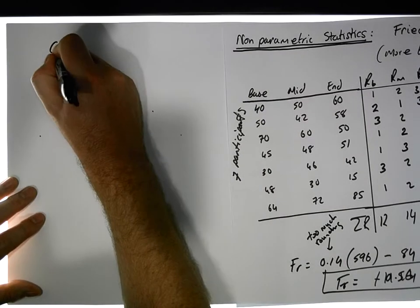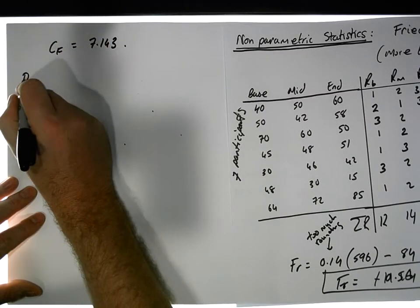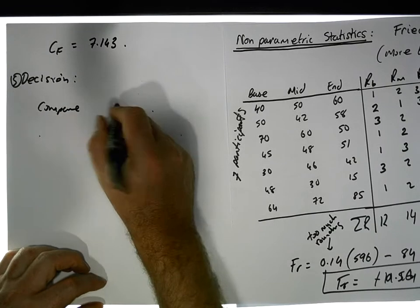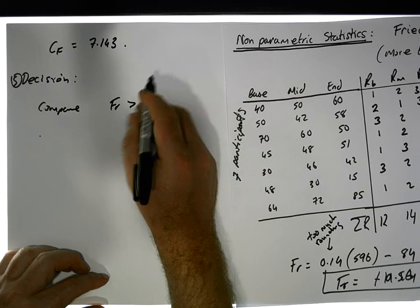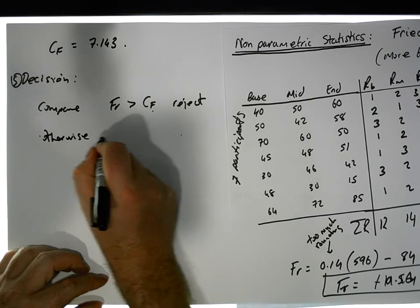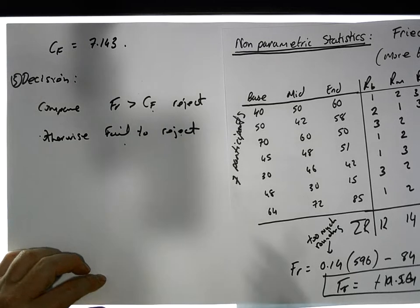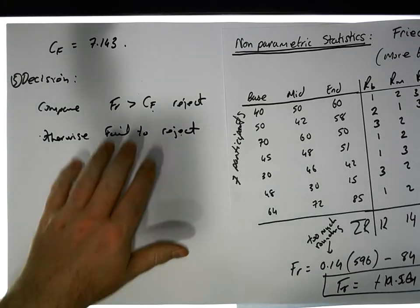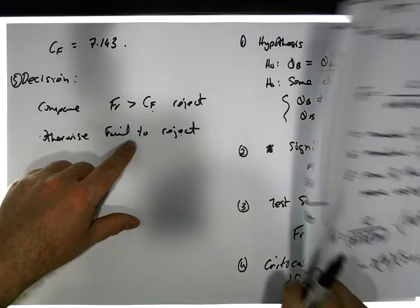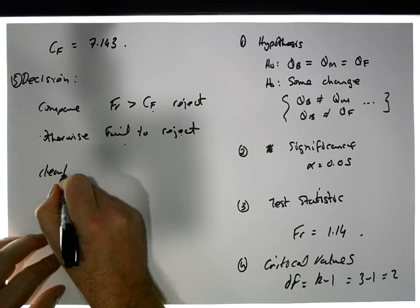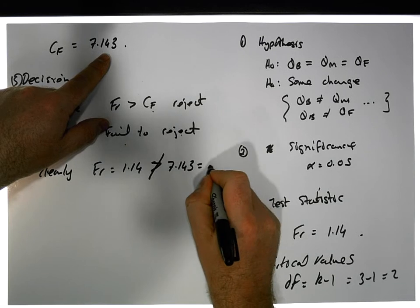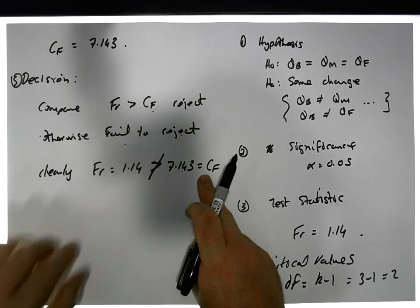Stage five is the decision. Our critical value for Fr is 7.143. We compare Fr to the critical value — if Fr is bigger than the critical value, we reject; otherwise, we fail to reject. In this case, Fr equals 1.14, which is clearly not bigger than 7.143, so we are failing to reject.